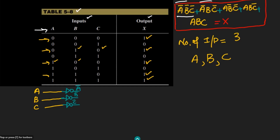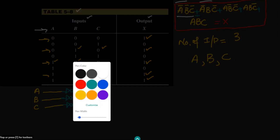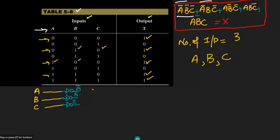The outputs of the three inverters are A complement, B complement, and C complement. After inversion, I need to multiply them together since they appear as a product term. I use a 3-input AND gate, feeding in A complement, B complement, and C complement, producing the output A complement B complement C complement.